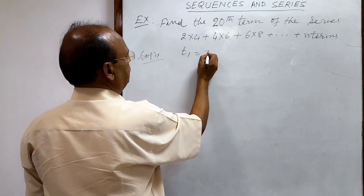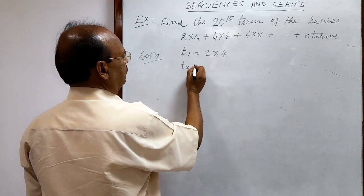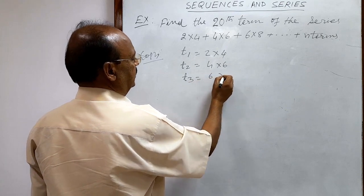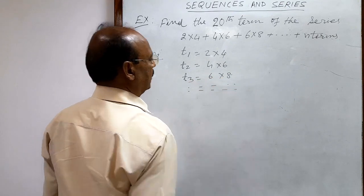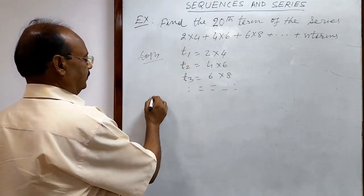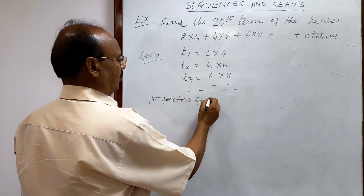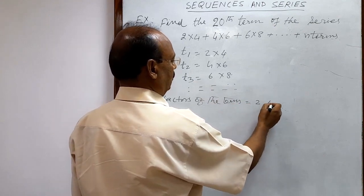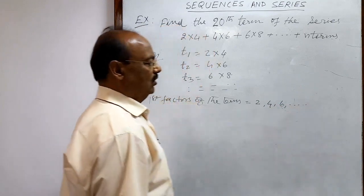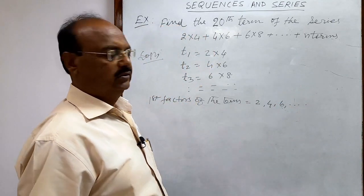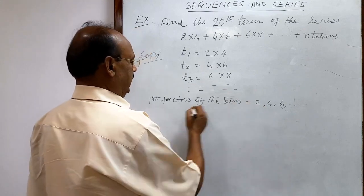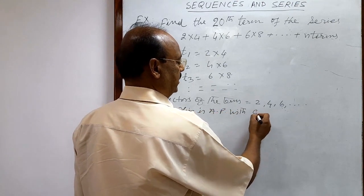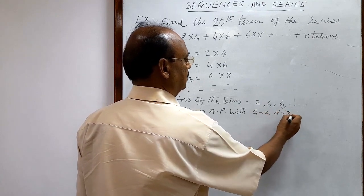The first term T₁ is 2×4, the second term T₂ is 4×6, and the third term T₃ is 6×8. Looking at the first factors of the terms: 2, 4, 6, and so on. This is an arithmetic progression with first term a = 2 and common difference d = 2.